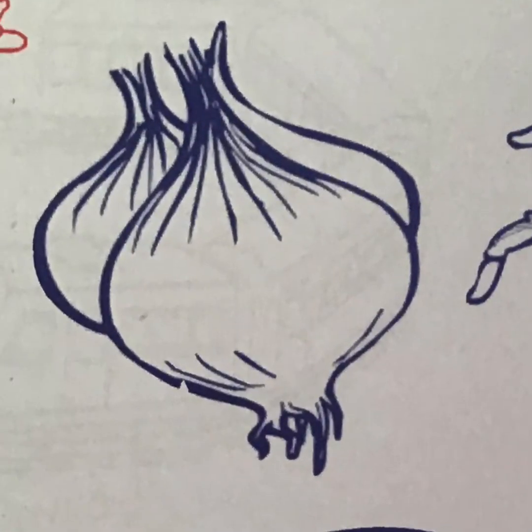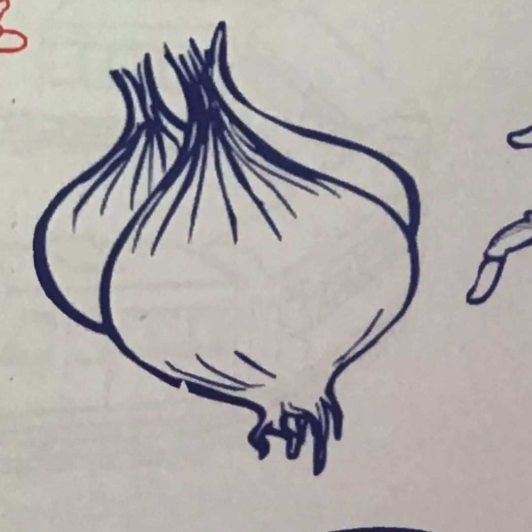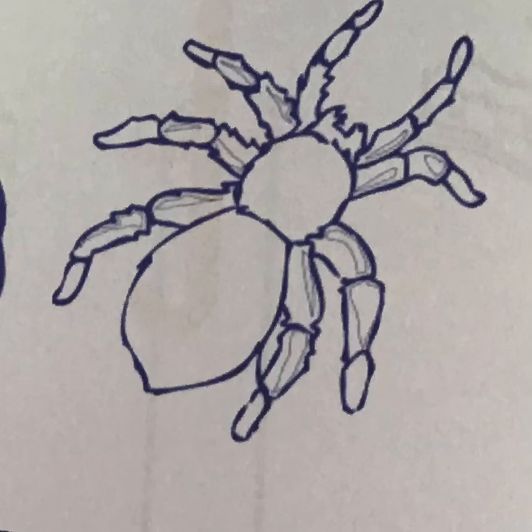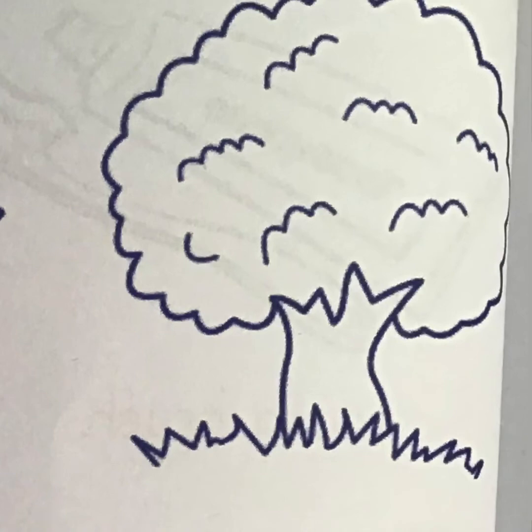Onions — do onions start with the letter t? No. What is this? Spider. Spider starts with the letter s. What is this? A tree. That's right, tree starts with the letter t.